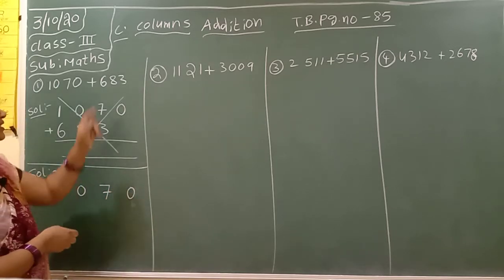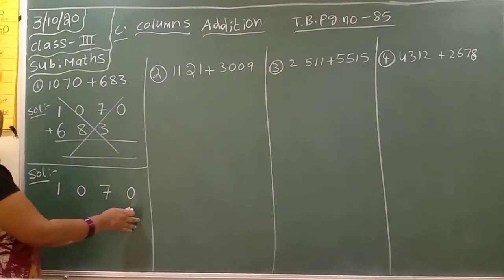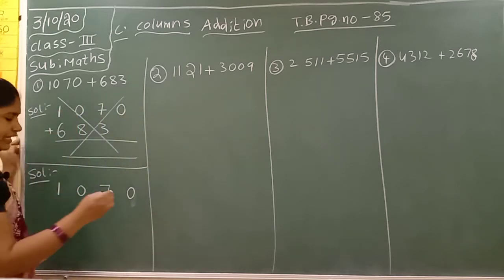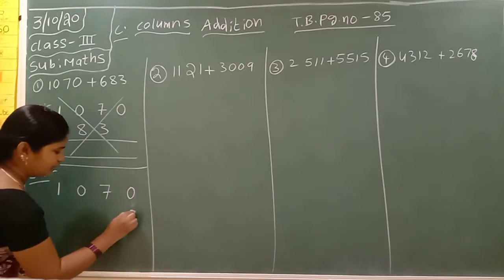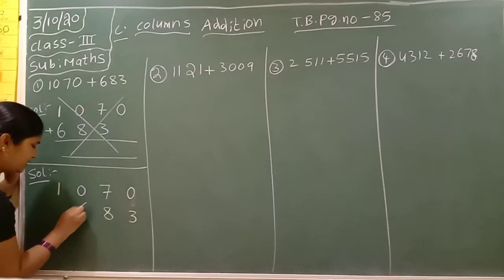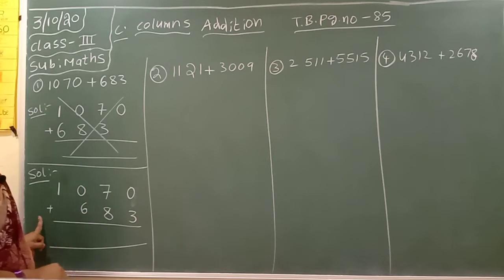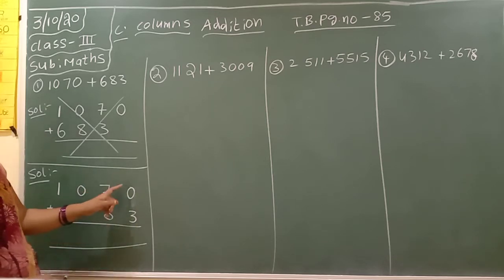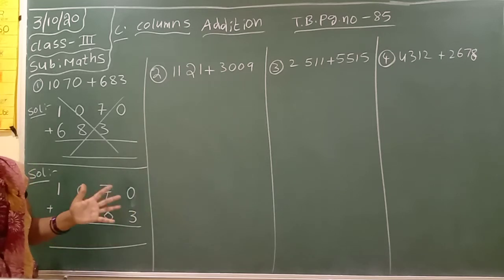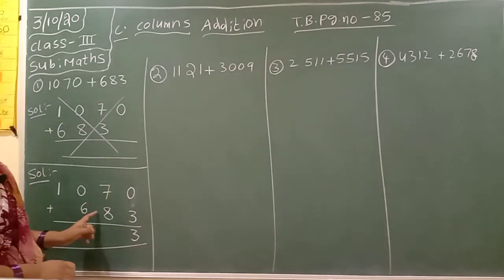Next number: six hundred eighty three. If the number of digits are same you can start from thousands place. If the number of digits are less, you have to start from one's place. Three is in one's place — write three here. Tens place: eight is there — write eight here. Hundreds place: six is there. Keep the addition symbol — don't forget to keep the addition symbol. Now add the numbers. Zero plus three: if you add zero to any number you will get the number itself, so zero plus three is equal to three. Seven plus eight: